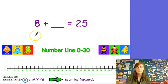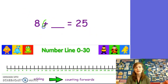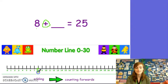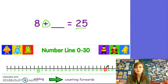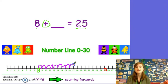Let's try another one. Can you read the number sentence with me? 8 plus something equals 25. We know that we are counting forwards because I can see my addition sign. I am going to start on 8 because this is the number I already know. I know that my total is 25, so I am going to draw a circle around 25 because I know that is my total — that is where I am going to stop on the number line. Let's see how many jumps I make. Can you help me do some careful counting? 1, 2, 3, 4, 5, 6, 7, 8, 9, 10, 11, 12, 13, 14, 15, 16, 17. Well done. 8 plus 17 equals 25.